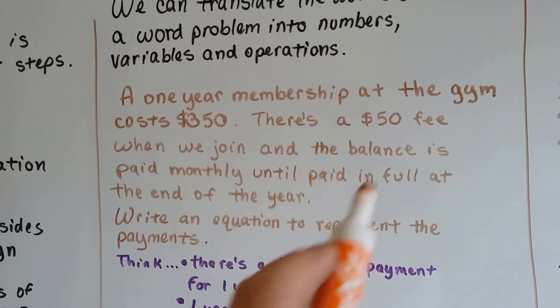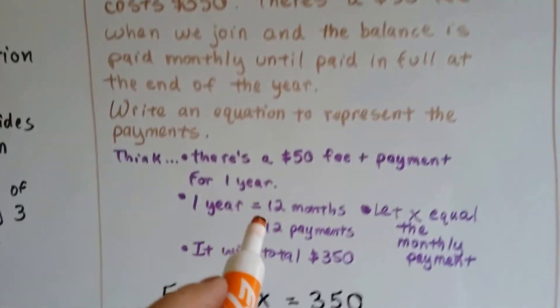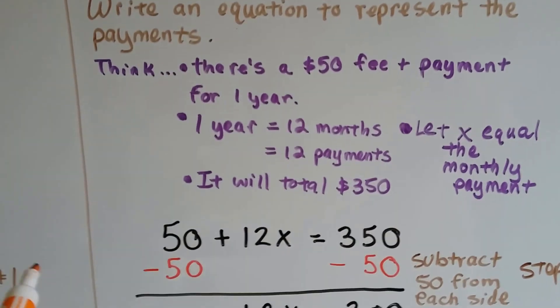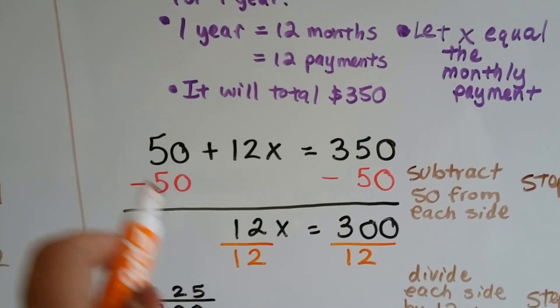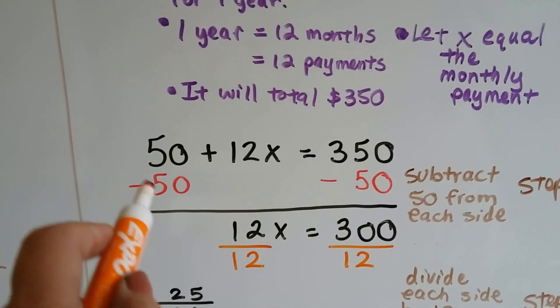The $50 initial fee, 12 monthly payments of x, whatever those payments are. So the first thing we do is we subtract 50 from both sides, because that's a positive 50.